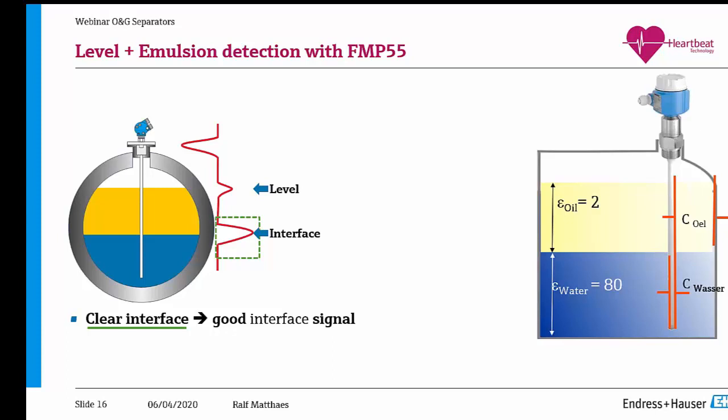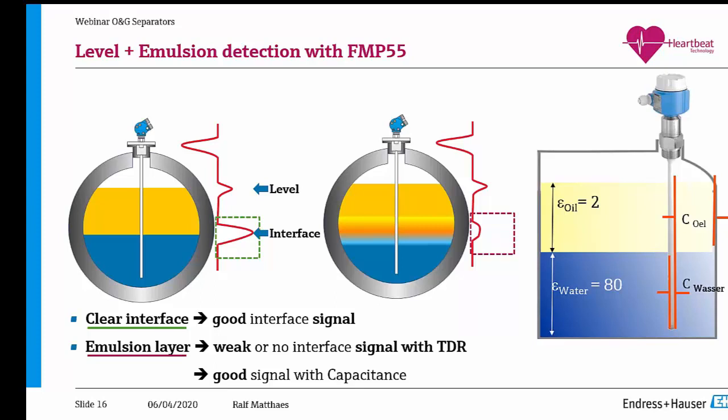With a clear interface you get a very nice strong signal. But if there's emulsion you lose the signal — there's a weak signal or even no signal using TDR alone. But if we combine both technologies — TDR plus capacitance — we can use the capacitance signal for the interface between oil and water, and use the TDR signal for the upper level of the hydrocarbon.